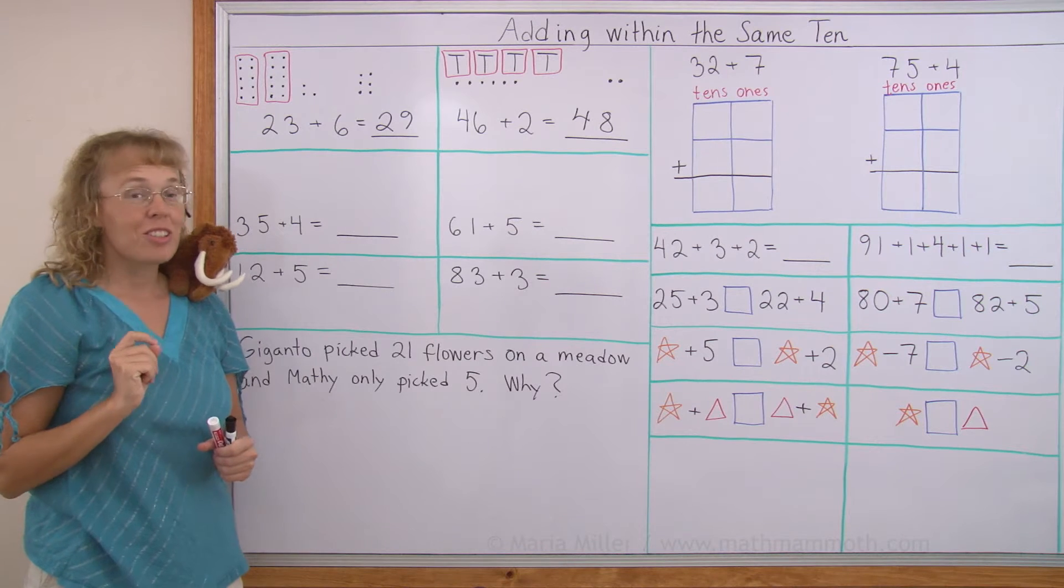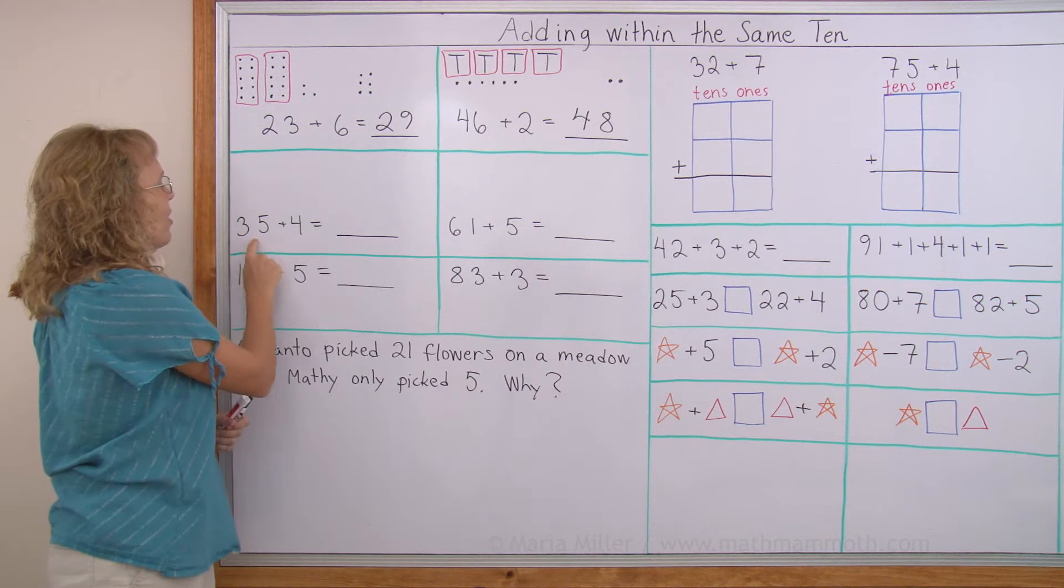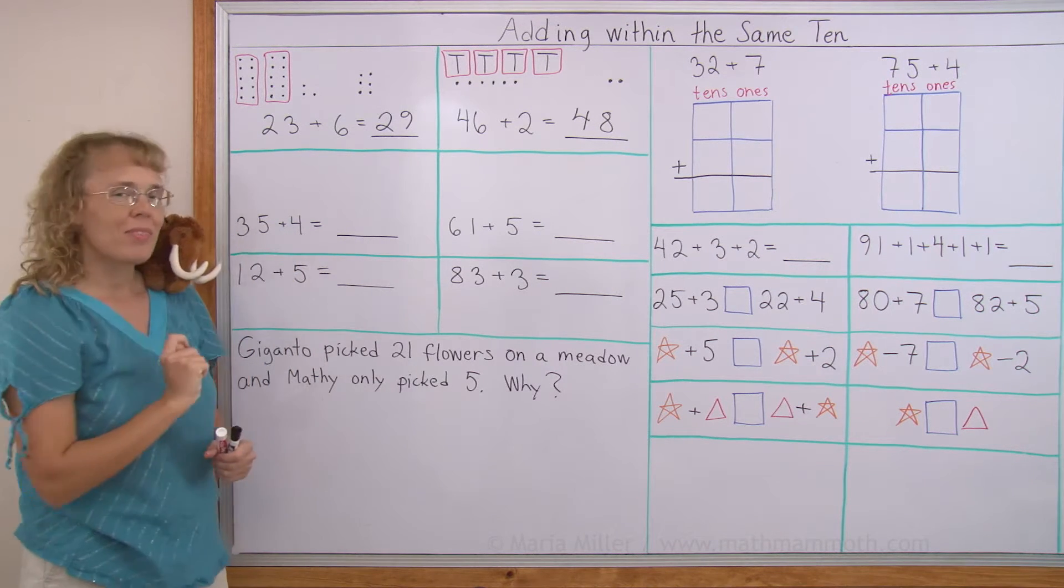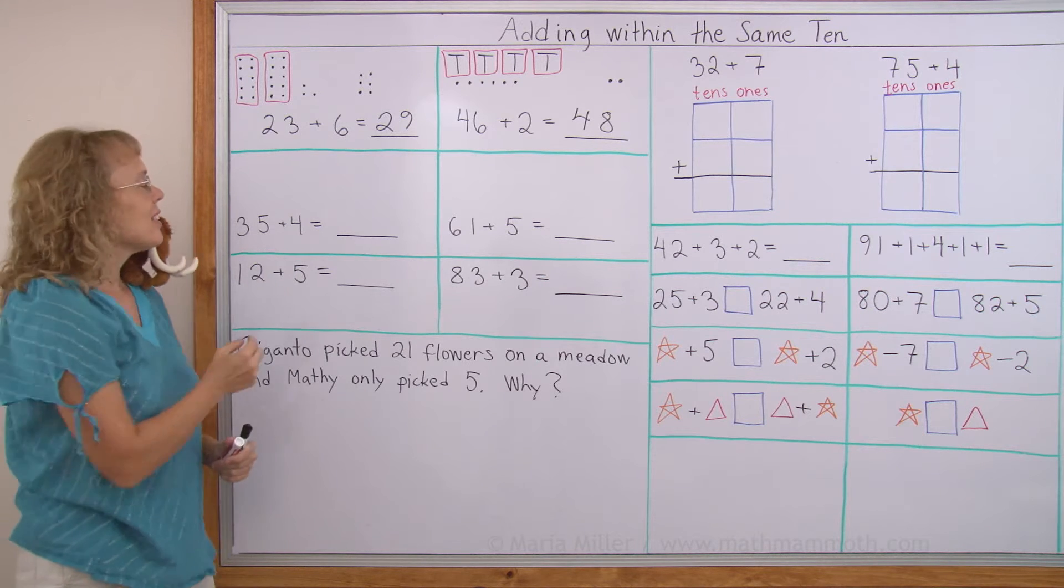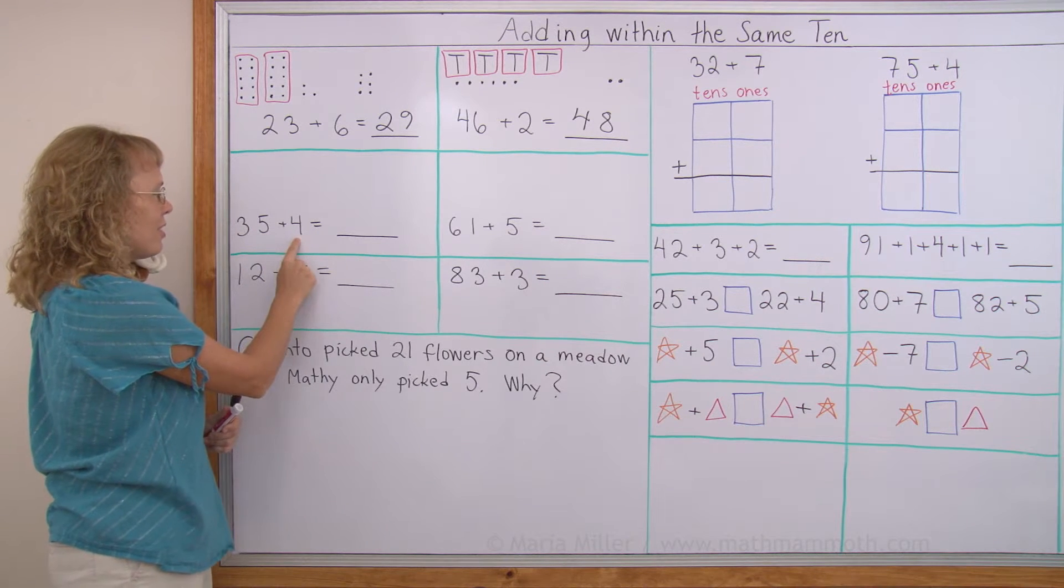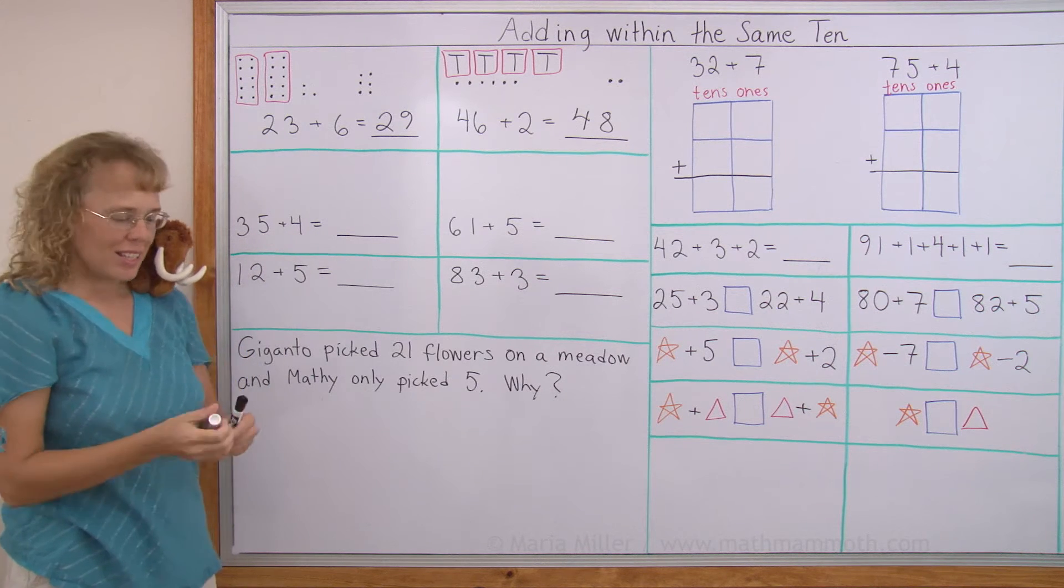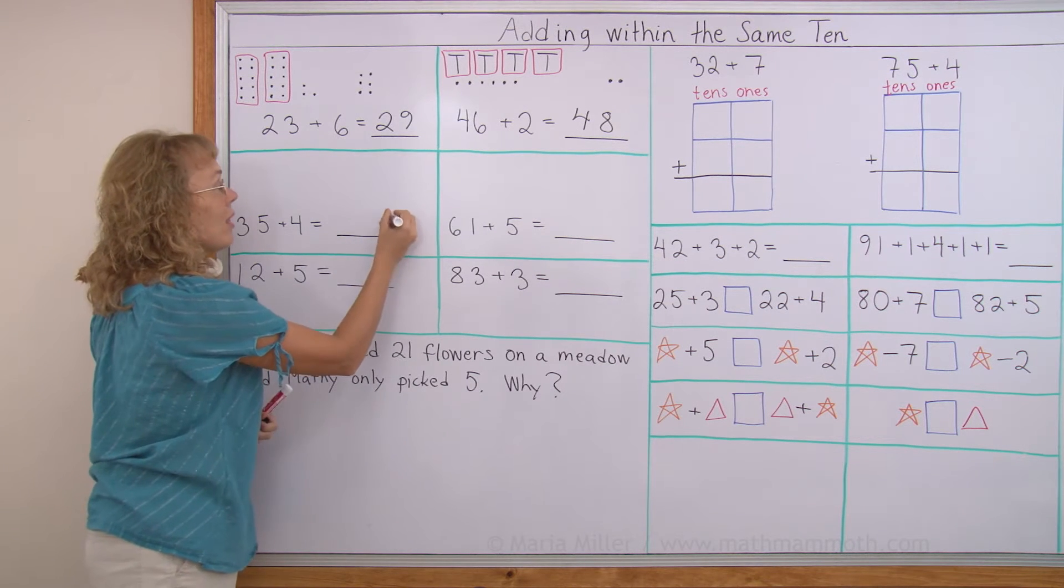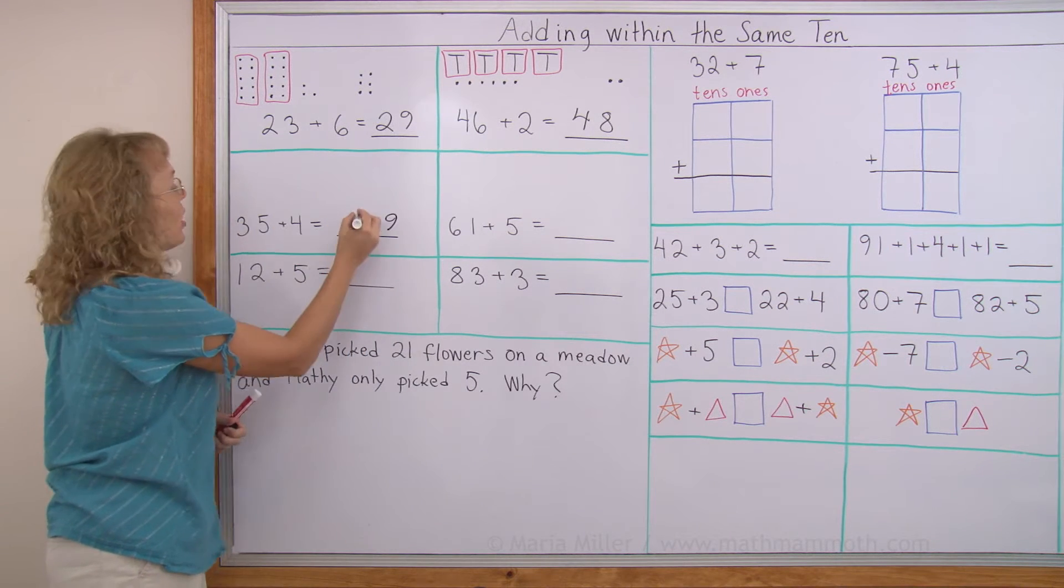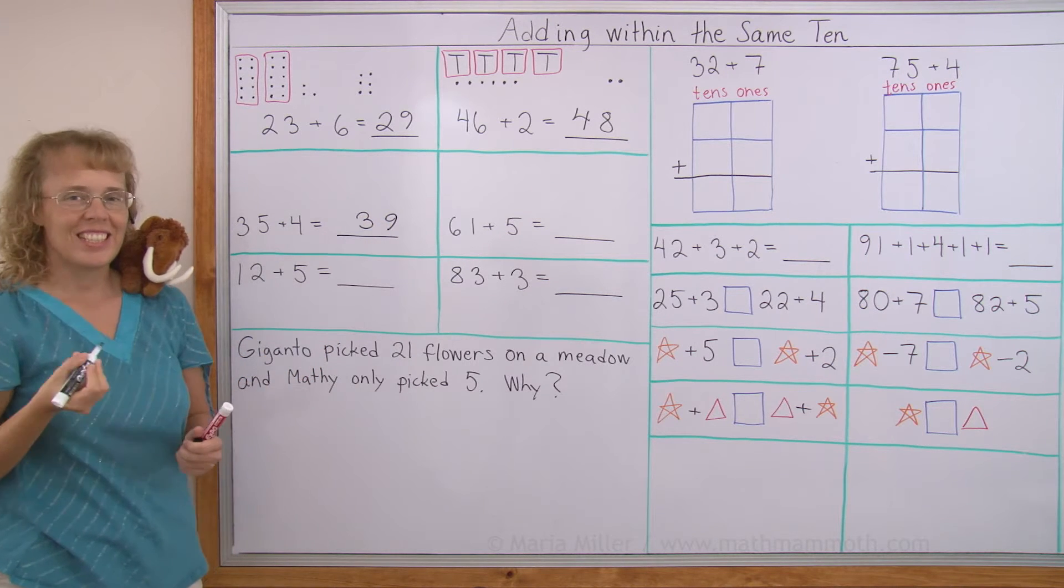Now let's check if you understood this principle. 35 plus 4. I can simply add the 1s, the 5 and 4. And then whatever I get, I get 9. And these 3 10s don't change. We have 3 10s and 9.